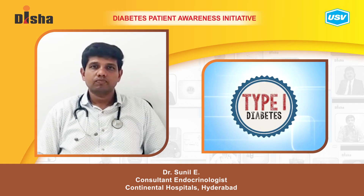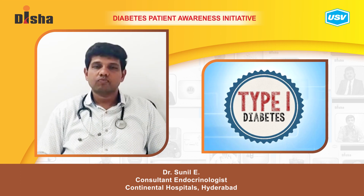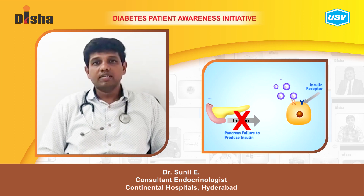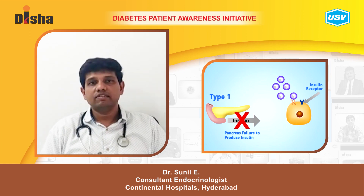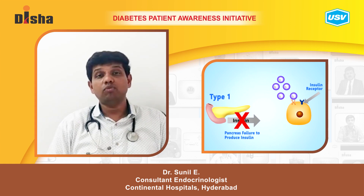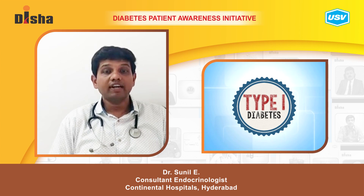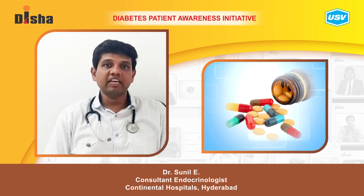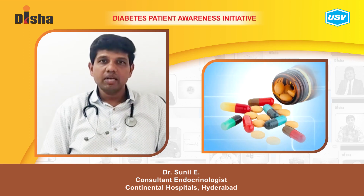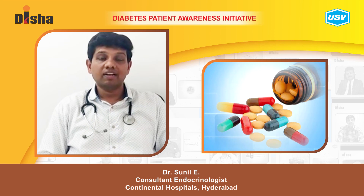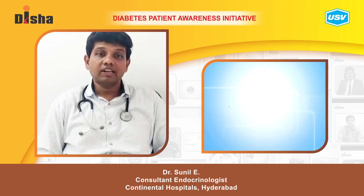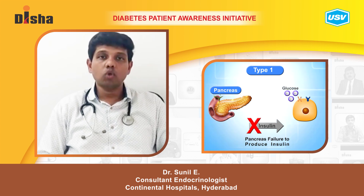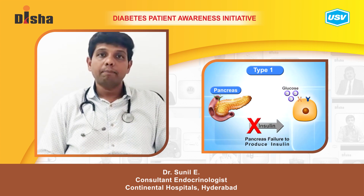Another type of diabetes is type 1 diabetes mellitus, which is an absolute deficiency of insulin in the body. Type 1 diabetes mellitus was previously called juvenile-type diabetes or insulin-dependent diabetes, but now it is called type 1 diabetes mellitus. It is different from type 2 in that oral medications do not work, because there is an absolute insulin deficiency in the body — meaning the body is not producing sufficient insulin to metabolize the sugars.